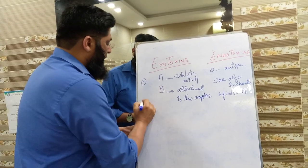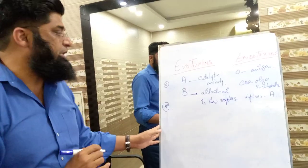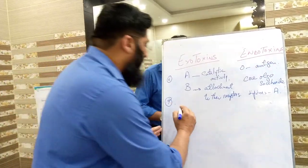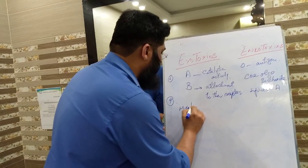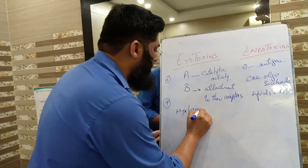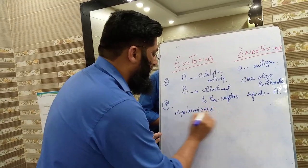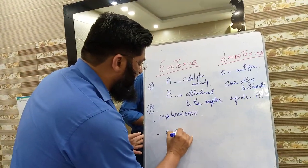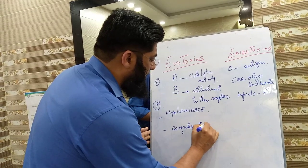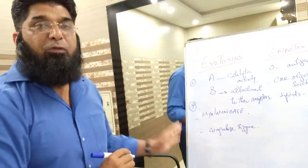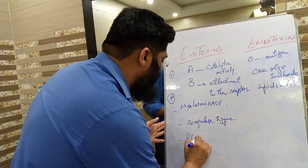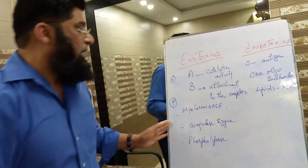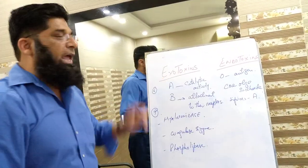The next point of differentiation concerns enzymes. Exotoxins have enzymes such as hyaluronidase, coagulase, and phospholipase. These enzymes are present in the exotoxins.